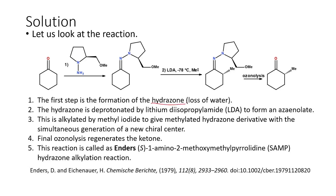The first step is formation of the hydrazone because we have a hydrazine derivative. The hydrogen and oxygen are lost in a multi-step reaction, leading to the hydrazone derivative. The most crucial step is the second one: the hydrazone is deprotonated with LDA to form the azaenolate. The azaenolate involves this nitrogen, and the alpha carbons. There are two alpha hydrogen atoms and only one is actually removed.